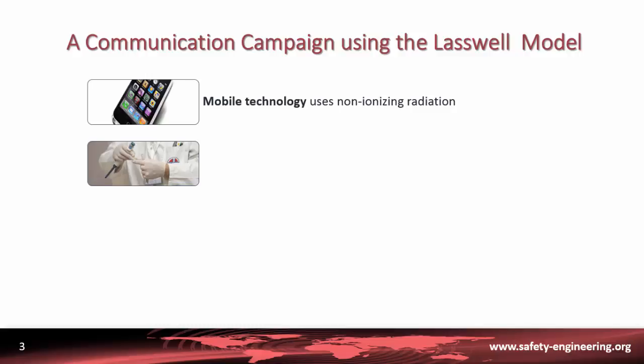Mobile technology uses non-ionizing radiation from base station transmitters for mobile phones that can trigger some risks for human health — for example, heating of tissues, nausea, insomnia, headaches, or cancer and leukemia.